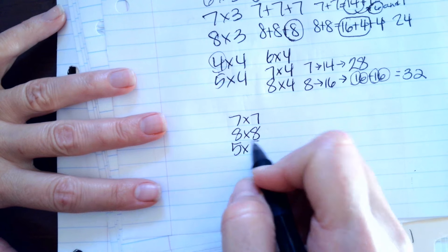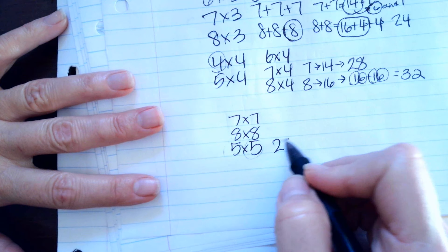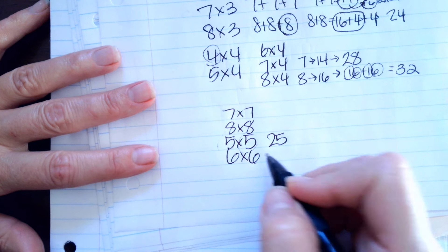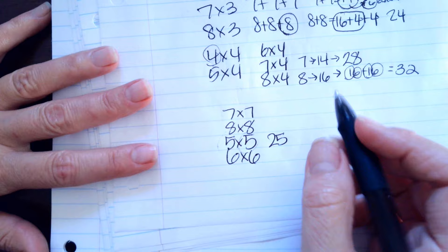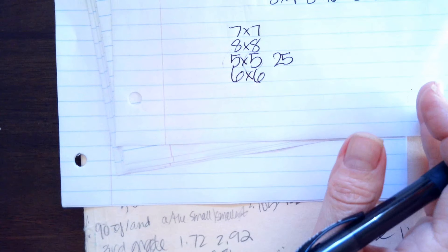5 times 5 kind of rhymes, but how many 5's do we have here? We have two 5's. It's 25. 6 times 6 is 36. So we just remember that. 5 times 5 is 25.